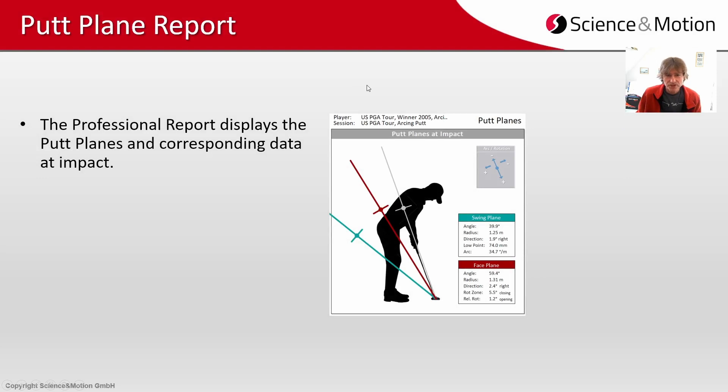The professional report displays putt plane data relative to impact. In red you see the face plane, the bullet and the vertical stripe indicate the center of this plane.